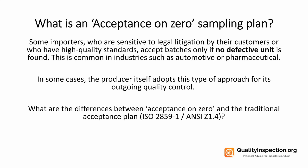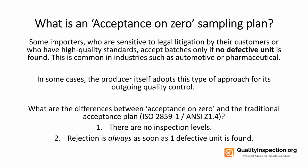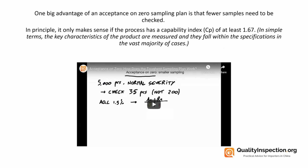What are the differences between acceptance on zero and the traditional acceptance plan — ISO 2859-1 or ANSI Z1.4? First, there are no inspection levels. Second, rejection is always triggered as soon as one defective unit is found. A big advantage of acceptance on zero is that fewer samples need to be checked. In principle, it only makes sense if the process has a capability index (CP) of at least 1.67 — meaning the key characteristics of the product are measured and fall within specifications in the vast majority of cases.